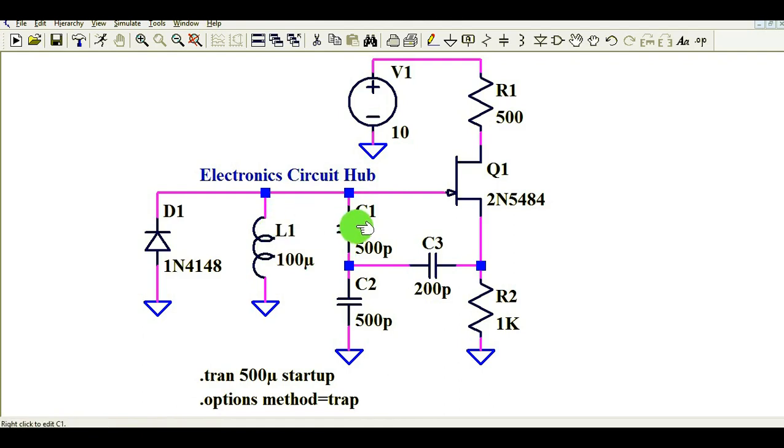This is very important to understand. To calculate the frequency of this Colpitt oscillator, the first step is you need to find out the equivalent capacitance of C1 and C2. Since these capacitors are connected in series, the equivalent capacitance CT is given by C1 multiplied by C2 divided by C1 plus C2. Once you get the equivalent capacitance CT and you have the value of L1, you can easily calculate the frequency value, which is given by F equals 1 divided by 2π√(L1·CT).